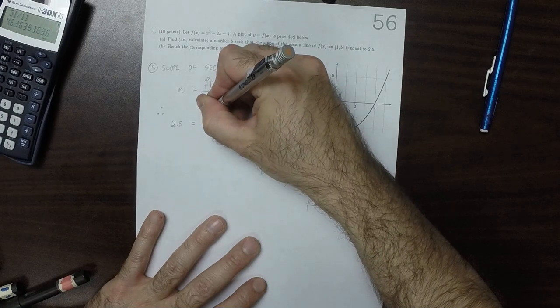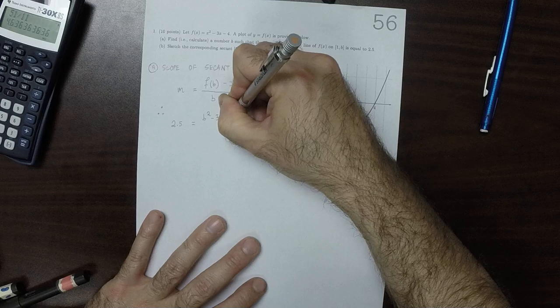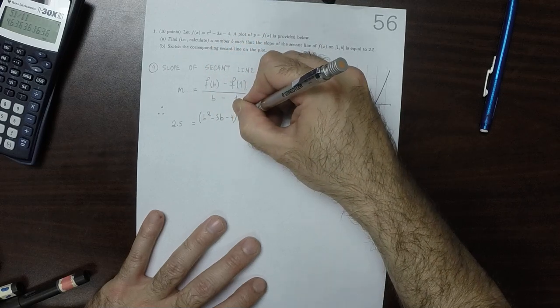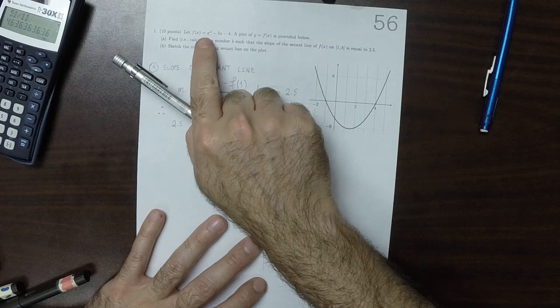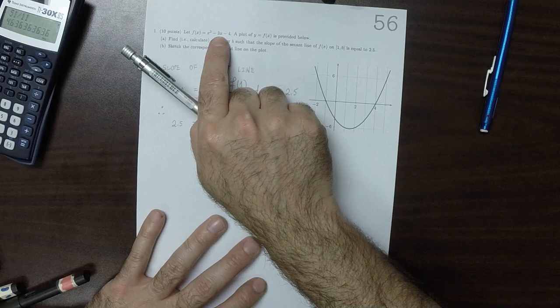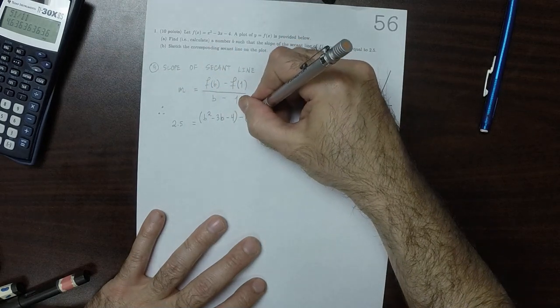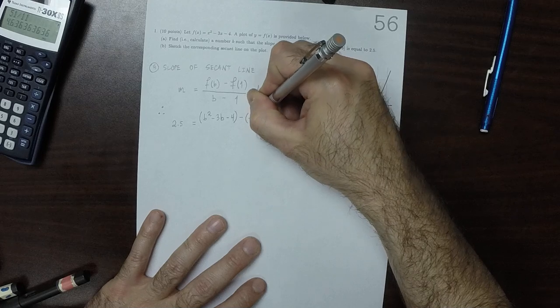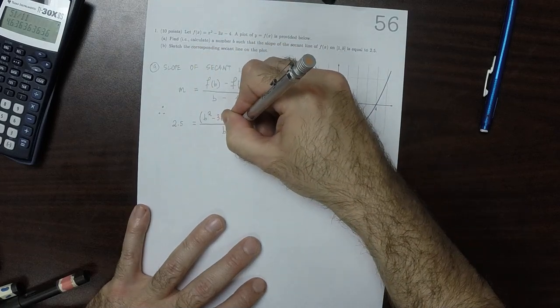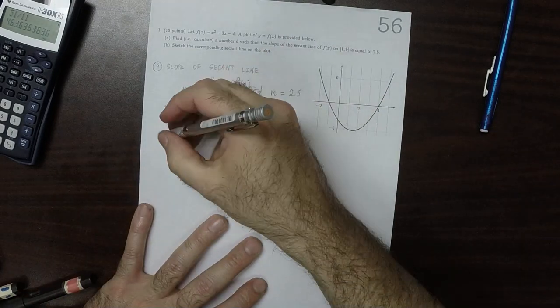well, b squared minus 3b minus 4 minus. If we plug in 1 to f, that'd be 1 minus 3. That's negative 2. Minus 4 is negative 6. So that'd be minus negative 6 over b minus 1, OK?